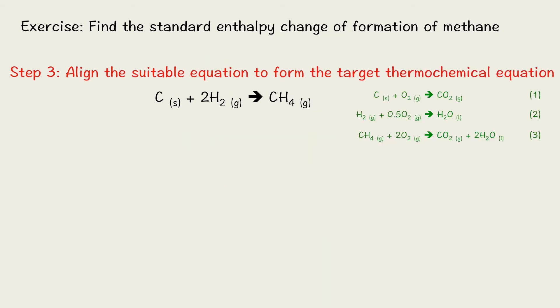And the step three, we need to align the suitable equation to form the target thermochemical equations. The black one is our target. You can see on the left hand side, we got a carbon. And from the given data, we only got carbon in the first equation. So we copy down the first equation. Then we need 2H2 from the three sets of given data.